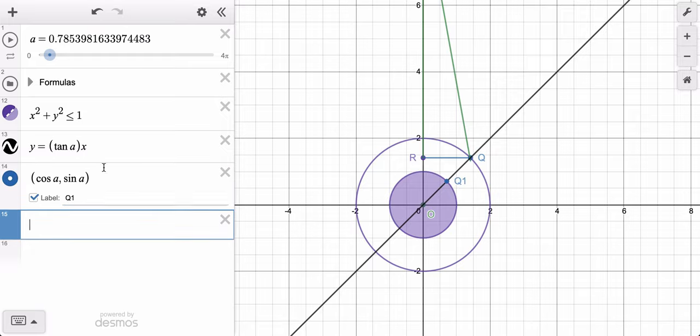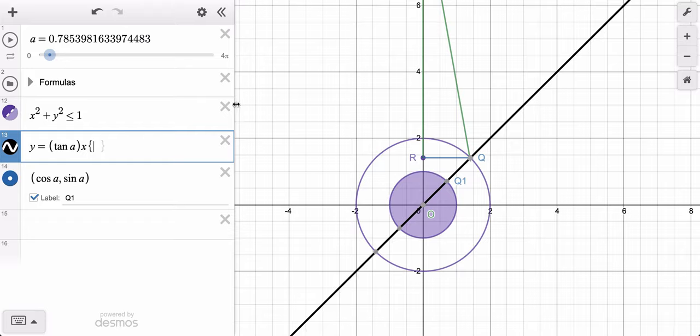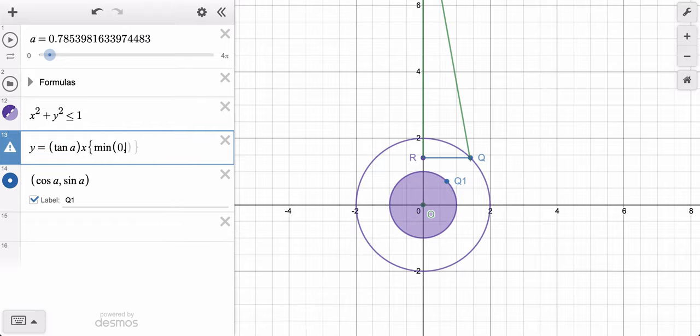So I want to define this line from whichever is smaller, the minimum 0 or the cos(a). And I want to graph the domain, restrict the domain up to the max of whatever is bigger, 0 or the cos(a). It's similar to what we did in other parts of this project right here. So now I've got a segment.